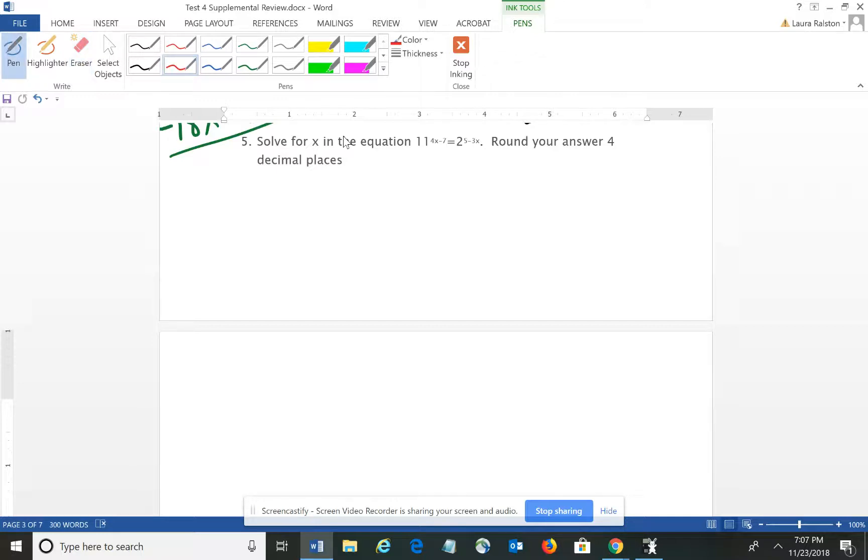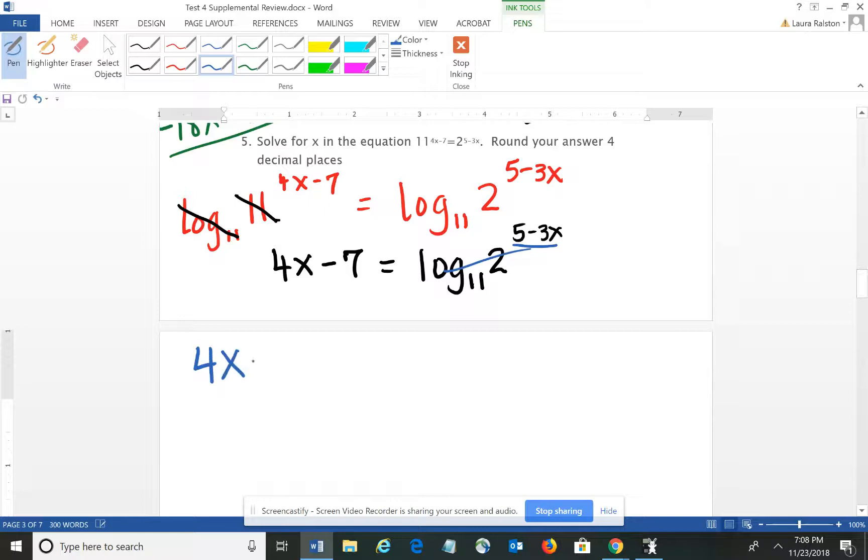First off, we need to do the log base 11 of each side so that I can eliminate one of the bases. The benefit of doing that is that log base 11 with a base of 11 will cancel off, so that I have 4X minus 7 equals log base 11 of 2 raised to the 5 minus 3X power. Then I'm going to use the power rule to bring this exponent down to the front so that I have 4X minus 7 equals 5 minus 3X times log base 11 of 2.